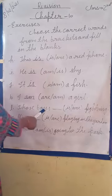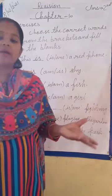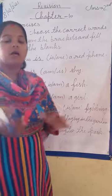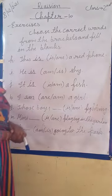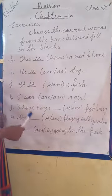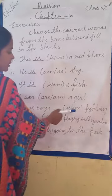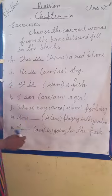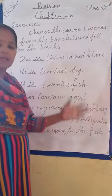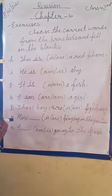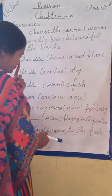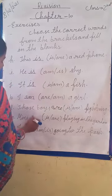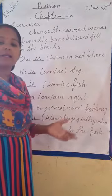Next, number L is: those boys. Ab 'those boys' — boys, how many? More than one — do, teen, char, paanch — yeh plural hai. Boys plural noun hai. Ab yahan noun plural mein hai, singular mein nahi, isliye yahan 'are' ka use hoga. Our sentence is: those boys are fighting. Ve ladke lad rahe hain.